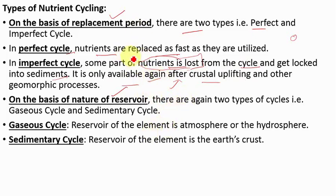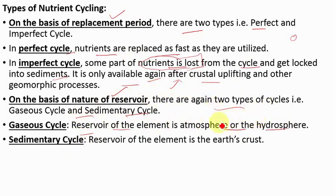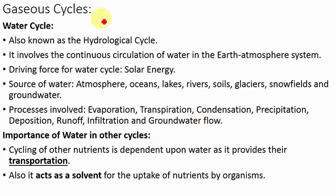On the basis of nature of reservoir, there are two types of cycles: the gaseous cycle and the sedimentary cycle. In the gaseous cycle, the main reservoir is the atmosphere or the hydrosphere. If the source of the element is the atmosphere or hydrosphere, it is a gaseous cycle. If the reservoir is the earth's crust, it is a sedimentary cycle. In today's lecture we will cover the gaseous cycles in detail; sedimentary cycles will be covered in the next lecture.